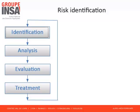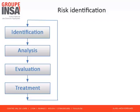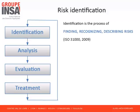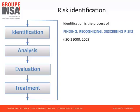To be treated — that is, avoided or controlled to prevent accidents — existing hazardous situations, their effects, and their consequences have to be known. The risk identification step aims at being familiar with the potential risks. Formally, ISO defines identification as the process of finding, recognizing, and describing risks.